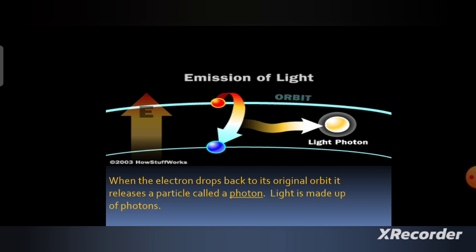When an electron comes from a higher orbit to a lower orbit, it releases a particle called a photon. Light is made up of photons.